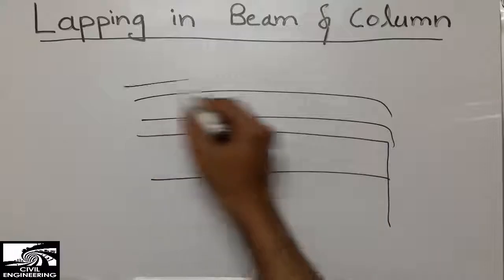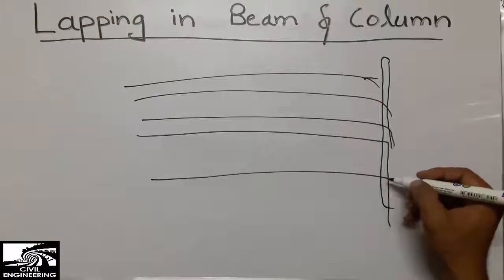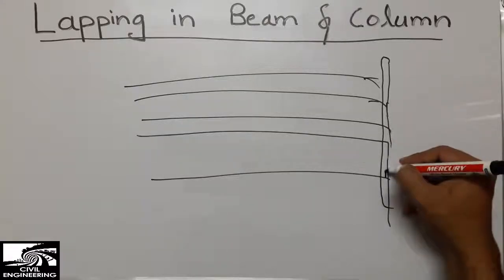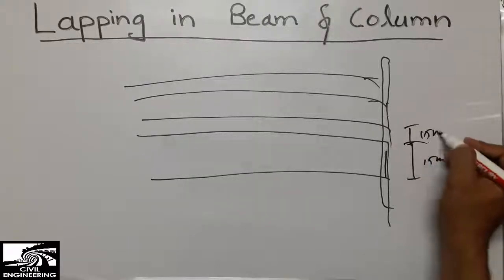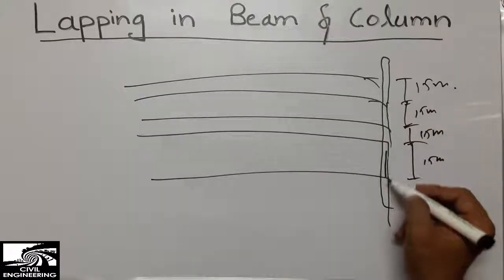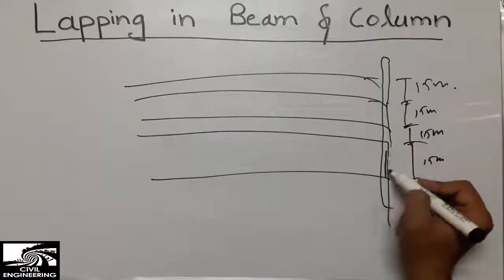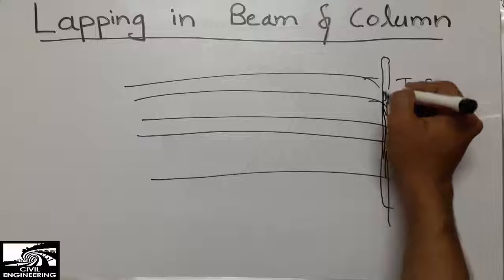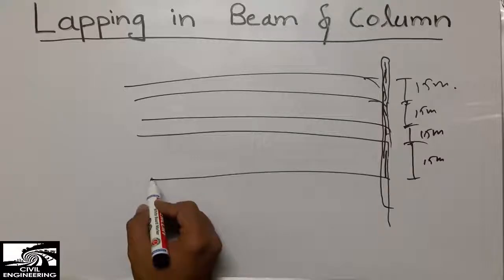These are the columns. If I'm going to provide the reinforcement, for example the column is 15 meters high, I place a 12-meter bar and then another 12-meter bar on top, and then another 12-meter bar, continuing throughout the structure. Similar is the case in the beam — we place the reinforcement bar and then continue with another overlapping bar.